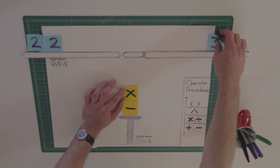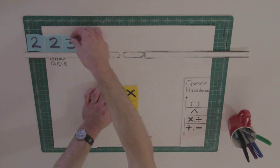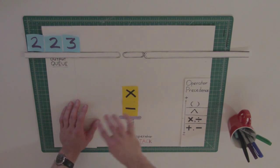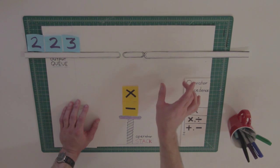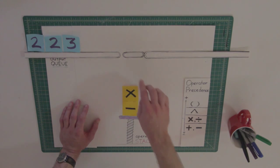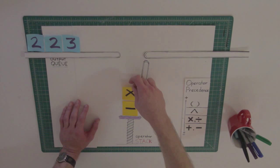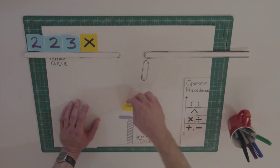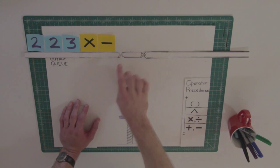Now we read the next token in the input. Is it a number? Yes, add it to the output queue. Now there are no input tokens left, so we leave that loop and run our last series of steps: pop all remaining operators from the operator stack and add them to the output queue. So pop and we add it to the output queue, and pop and we add it to the output queue. And here we have the expression in POSIX notation.